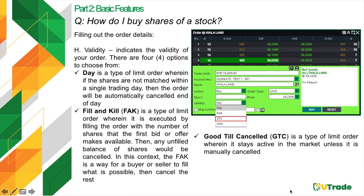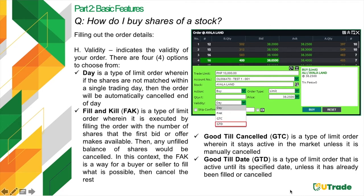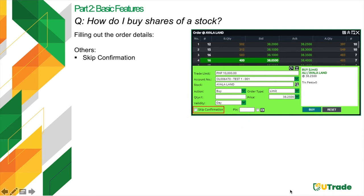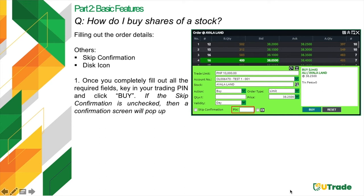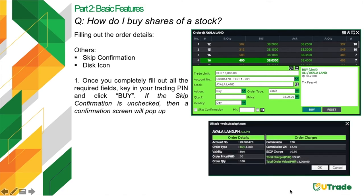Once you completely fill out all required fields, type your trading PIN and click Buy. If the Skip Confirmation option is unchecked, a confirmation window will pop up. Click OK to confirm your transaction and it will be automatically submitted.